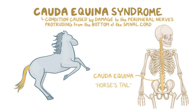In disc herniation and disc prolapse, you reassure the patient and give analgesia. If there are red flags — saddle paresthesia, fecal or urinary incontinence — then you do an MRI. If this is sciatica (not disc herniation or prolapse), along with the painkiller you must prescribe amitriptyline, gabapentin, or pregabalin.